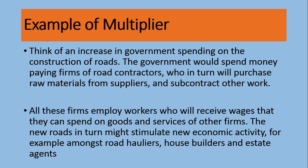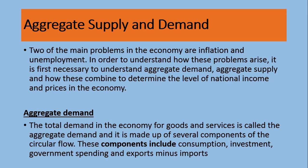The new roads in return might stimulate economic activity, for example among road hauliers, house builders, and estate agents. Every time an individual spends one pound, it generates the income of another person. So the 100 million pounds injected into the economy by the government results in a multiple of that original amount. This is called the multiplier effect.